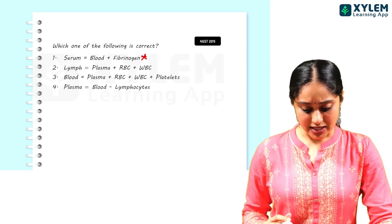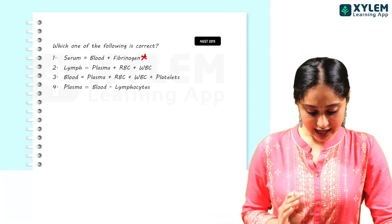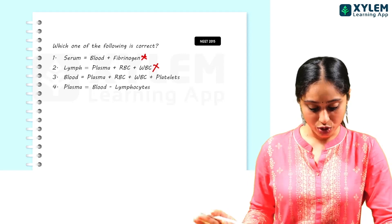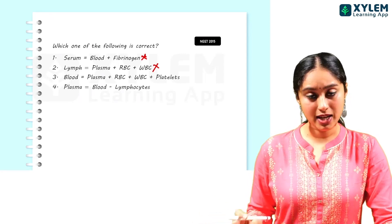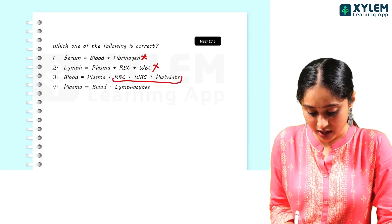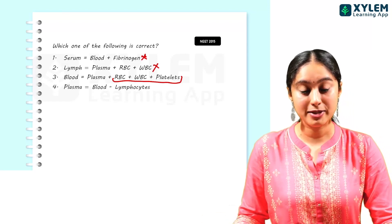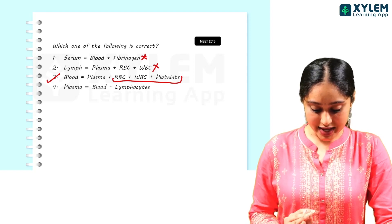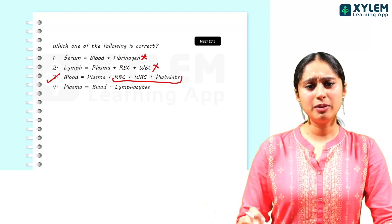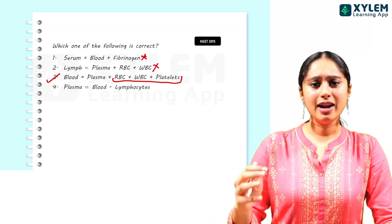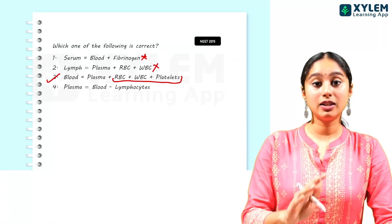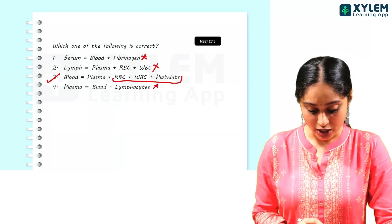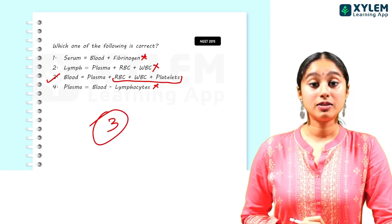Option 3 says blood is plasma plus RBC, WBC, and platelets. Since blood is plasma plus formed elements, this option seems correct. Option 4 says plasma is blood minus lymphocytes — but lymphocytes are a type of WBC, which comes under formed elements. When you remove all formed elements from blood you get plasma, not just removing lymphocytes. So the answer is option 3.